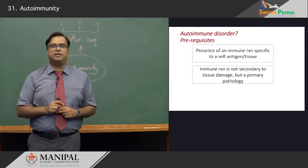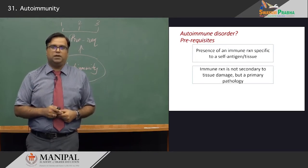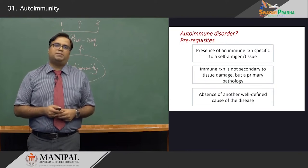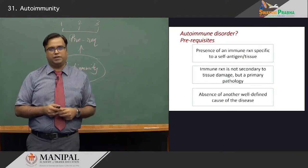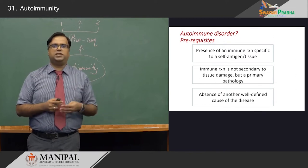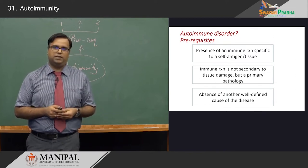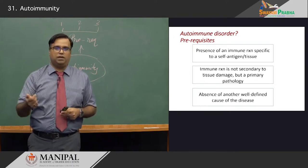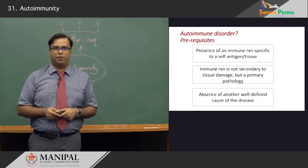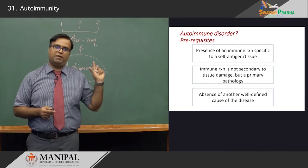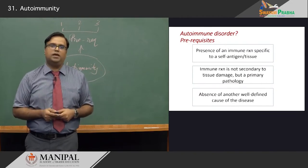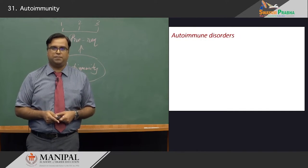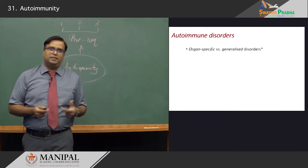You should demonstrate it as a primary pathology. The third important criterion is to rule out the absence of other well-defined causes of the disease. There are a host of other conditions which can cause secondary autoimmunity — those are not autoimmune disorders. Having met all three of these prerequisites, you may have entered the territory of autoimmune disorders.